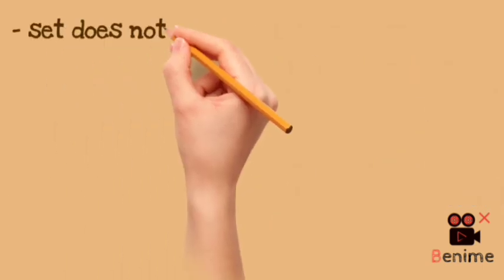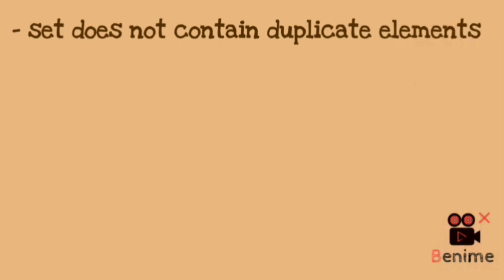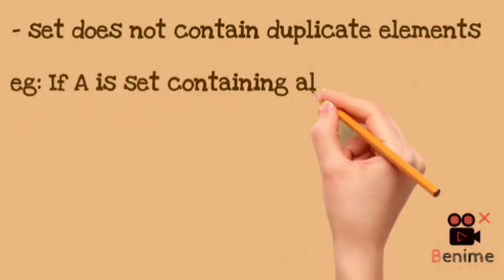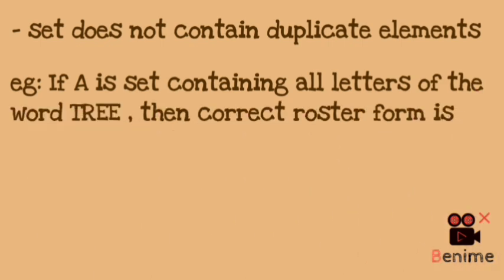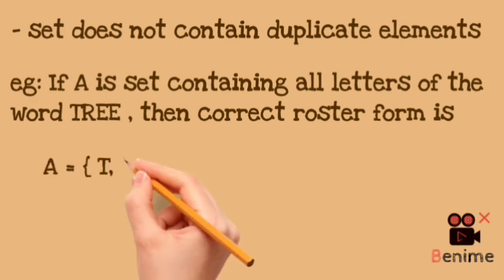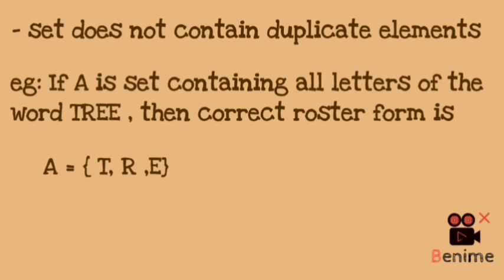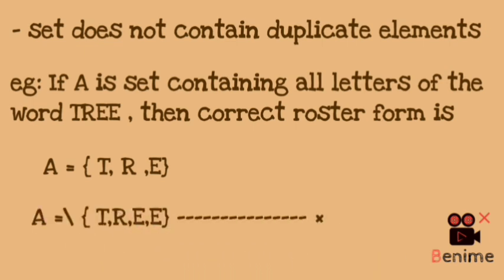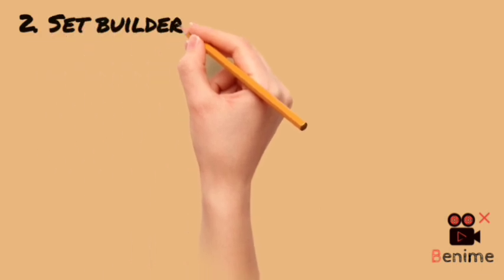An important thing to remember: in a set, there is no duplicate element. For example, suppose I have a set of letters in the word 'tree'. You represent this in Roaster Form as A = {T, R, E}. Even though 'tree' has two E's, you write only one E. If you write E two times, that is not correct — you will not write duplicate elements in a set.